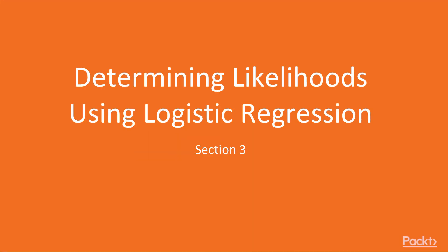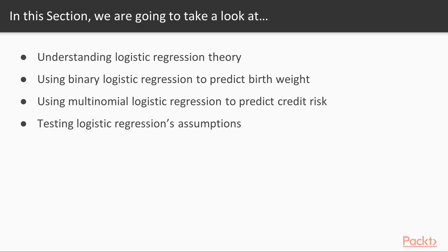Welcome to Section 3. In this section, we're going to talk about how to determine likelihoods using logistic regression. We're going to take a look at the theory behind logistic regression. After that, we'll have a video on how to use binary logistic regression to predict birth weight, then move on to multinomial logistic regression to help predict credit risk, and finally a video that allows us to test logistic regression's assumptions.